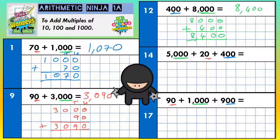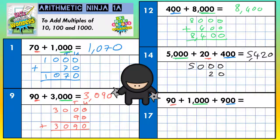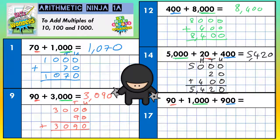Next we've got 5000 plus 400 plus 20 — saying that in the correct order, biggest to smallest. So that's going to be 5000, 400, and 20 — five thousand, comma, four hundred and twenty. Double check with the column method, making sure everything's lined up. Zero, zero, and zero; zero, two, and zero is two; zero plus four is four; five plus nothing is five — five thousand four hundred and twenty.